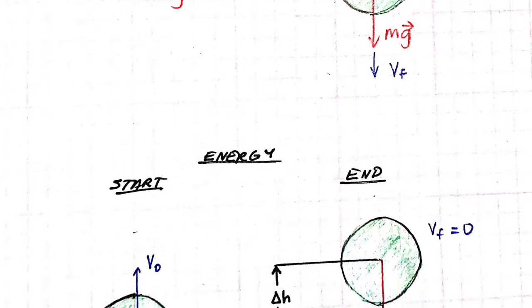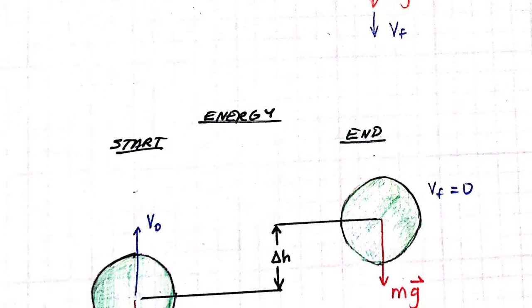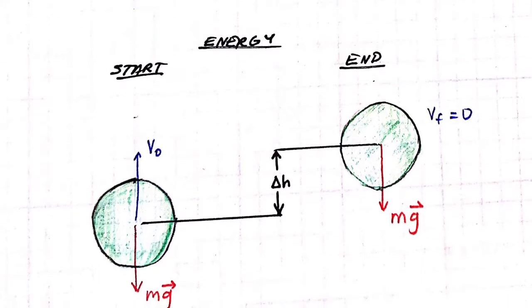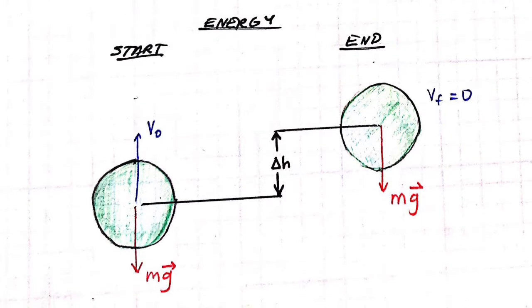As seen in the start of the next diagram, the ball then has a final velocity of zero as it reaches its peak before falling again. This continues until the ball has a change in height of zero.